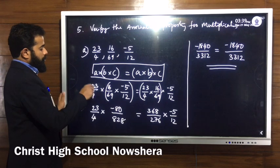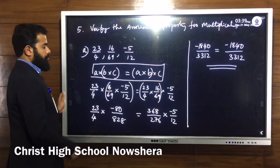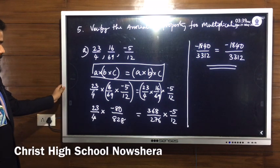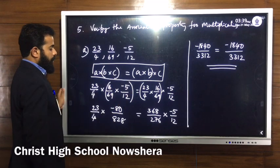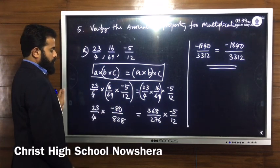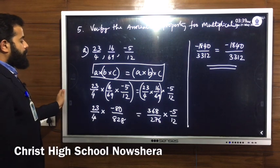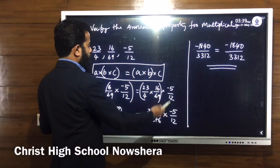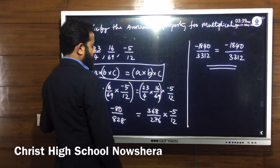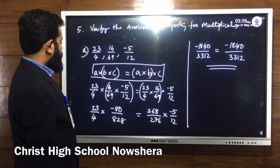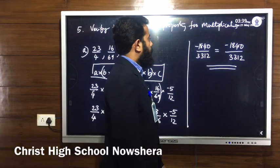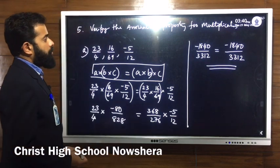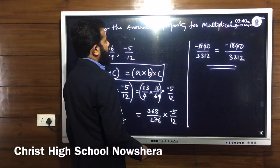Substituting: left side is 23 by 4 into (16 by 69 into minus 5 by 12), and right side is (23 by 4 into 16 by 69) into minus 5 by 12. Doing calculations inside each bracket first, then multiplying gives minus 1840 by 3312 on both left and right sides, so LHS equals RHS.